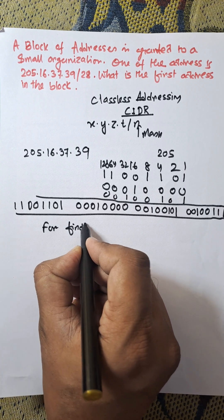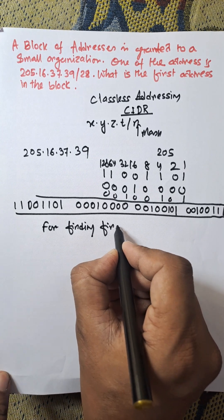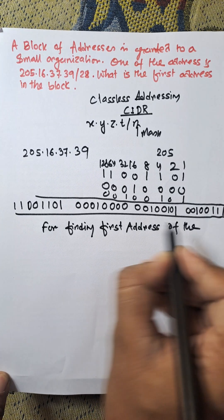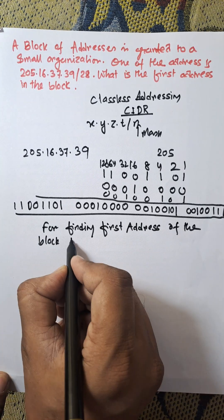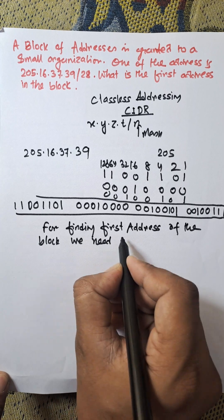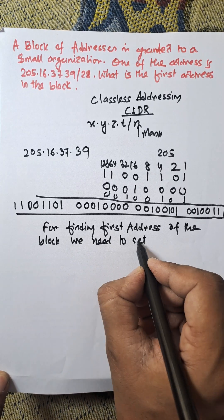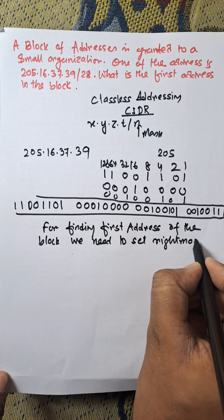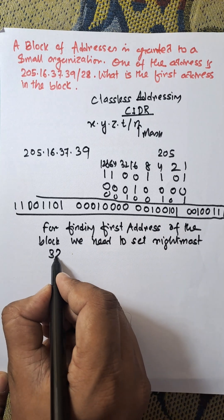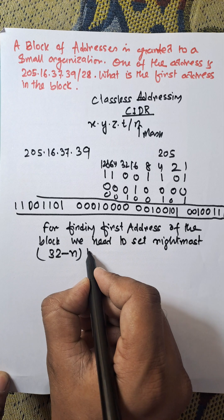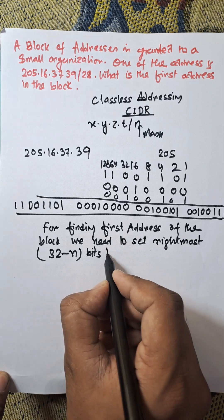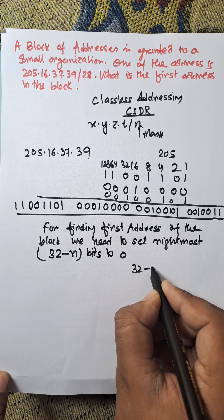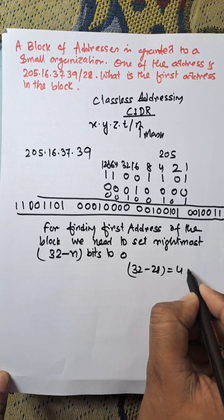Now for finding first address in the block, we need to set rightmost 32 minus n bits to 0. 32 is the total number of bits, 32 minus n is the mask bit. Here n is 28, that is 32 minus 28 equal to 4 bits to 0.